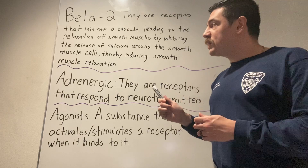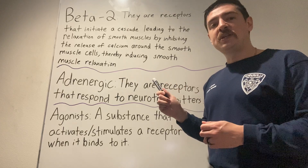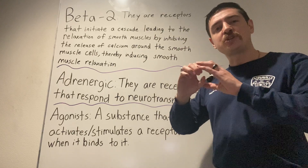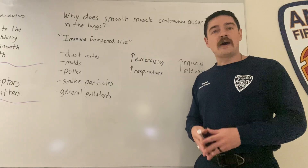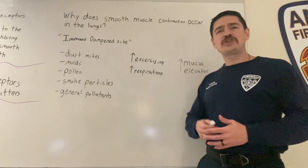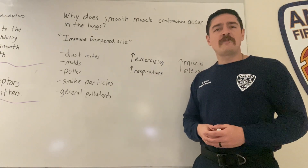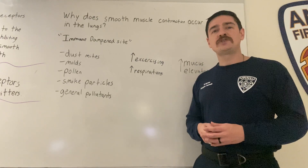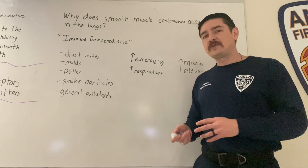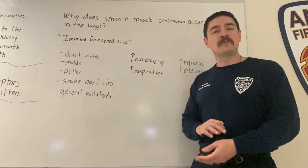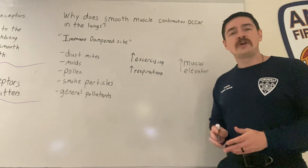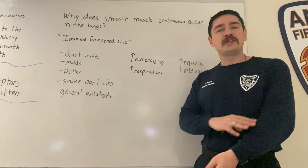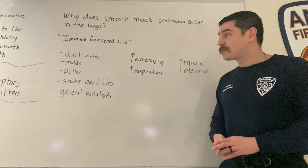Before we get into smooth muscle relaxation, we need to understand how smooth muscles contract in the first place. Looking at the body, we generally have a fairly strong immune system. If our body comes into contact with different pathogens, we elicit a strong immune response — fever, white blood cells, neutrophils — all of which come into contact with the bacteria or pathogen. Over time, with T and B cells, we're able to take care of whatever the pathogen is.